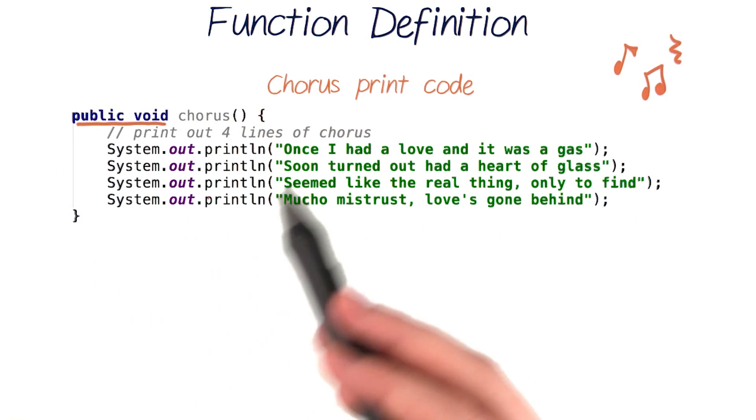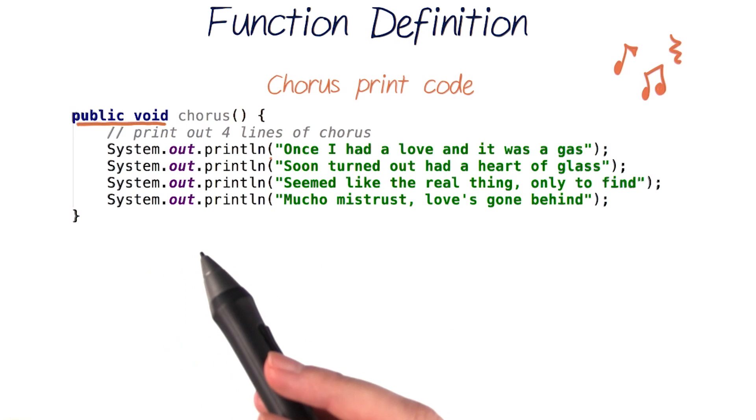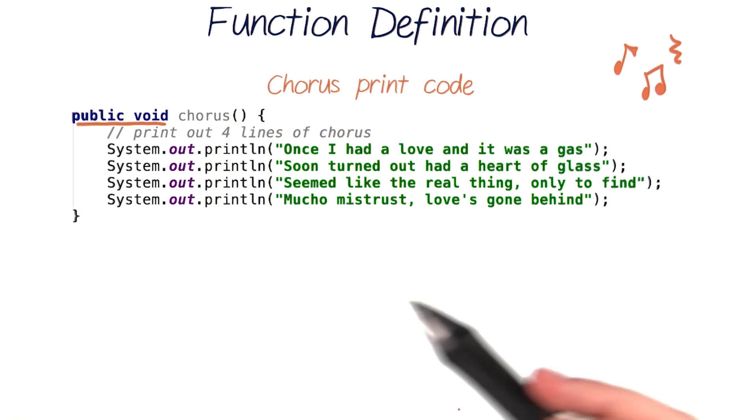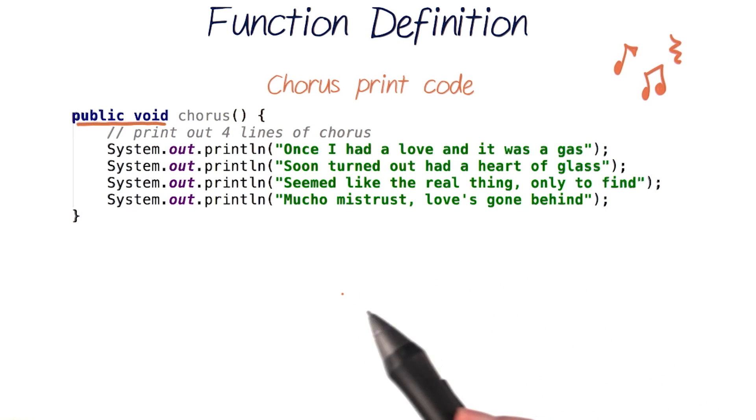The start of this function looks like the start of the println function we've seen before, with the words public and void. These starting words may seem a bit confusing at first, so let's go through what we just wrote piece by piece.